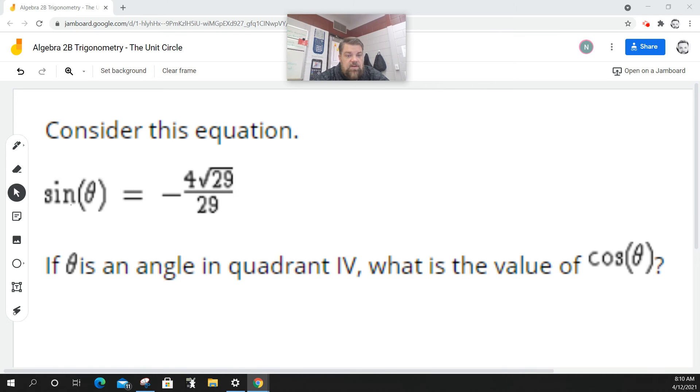All right, so it says consider the following equation: sine of theta equals negative 4 root 29 over 29. If theta is an angle in quadrant 4, what is the value of cosine of theta?